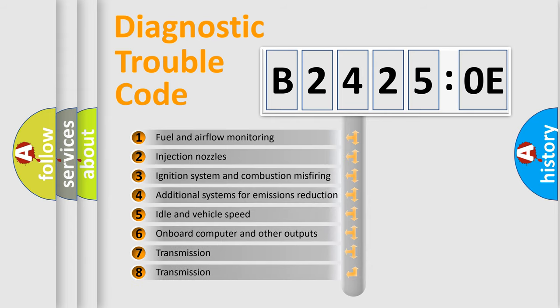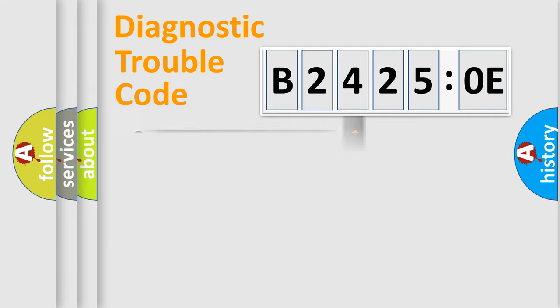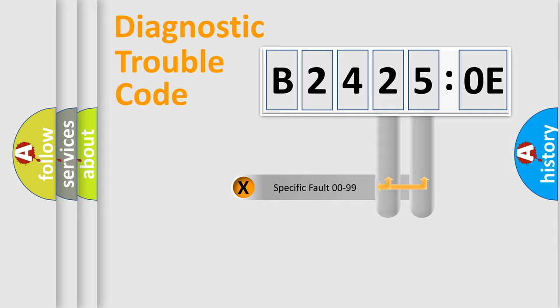The third character specifies a subset of errors. The distribution shown is valid only for the standardized DTC code. Only the last two characters define the specific fault of the group.